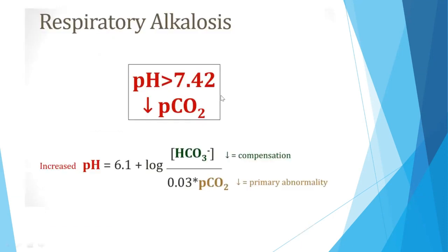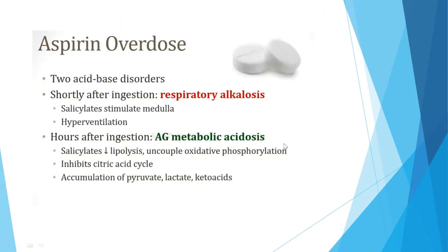Respiratory alkalosis: pH more than 7.42 with decreased pCO2. The primary abnormality is decreased pCO2; bicarbonate decreases as compensation. The most commonly tested cause of respiratory alkalosis is aspirin overdose. Shortly after aspirin ingestion, it stimulates the medulla causing hyperventilation and respiratory alkalosis. But hours after ingestion, it causes anion gap metabolic acidosis — salicylates inhibit lipolysis and the citric acid cycle, leading to accumulation of pyruvate, lactate, and keto acids. So initially respiratory alkalosis, later metabolic acidosis.